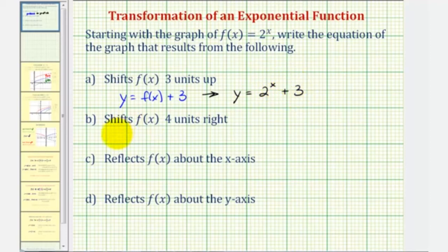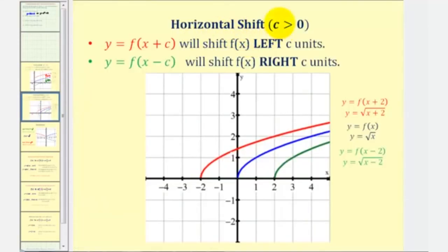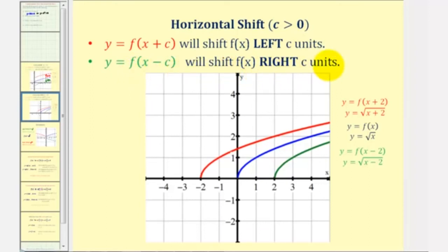Next we want to shift f of x four units right, so let's review horizontal shifts of the graph. When C is greater than zero, y equals f of the quantity x plus C shifts f of x left C units, and y equals f of the quantity x minus C shifts f of x right C units.